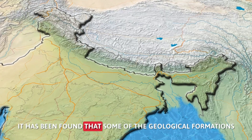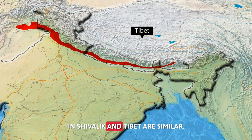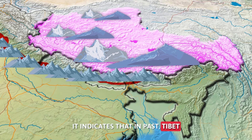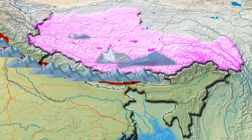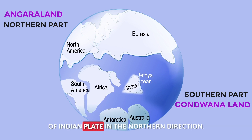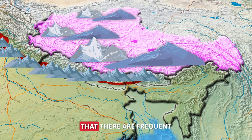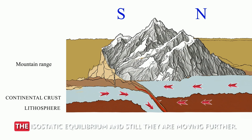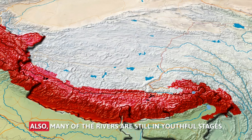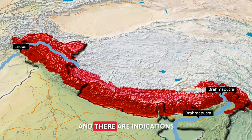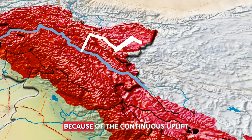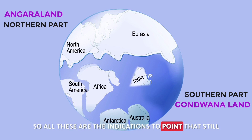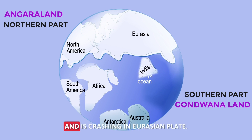There are many evidences to prove that Himalayas are still rising. First, some geological formations in Shivalik and Tibet are similar, but today Tibet is much higher in elevation than the Shivaliks — indicating Tibet has risen due to the continuous northward movement of the Indian Plate. Also, frequent earthquakes in the Himalayan region show that Himalayas have not yet attained isostatic equilibrium. Additionally, many rivers are still in youthful stages and show signs of rejuvenation due to the continuous uplift.